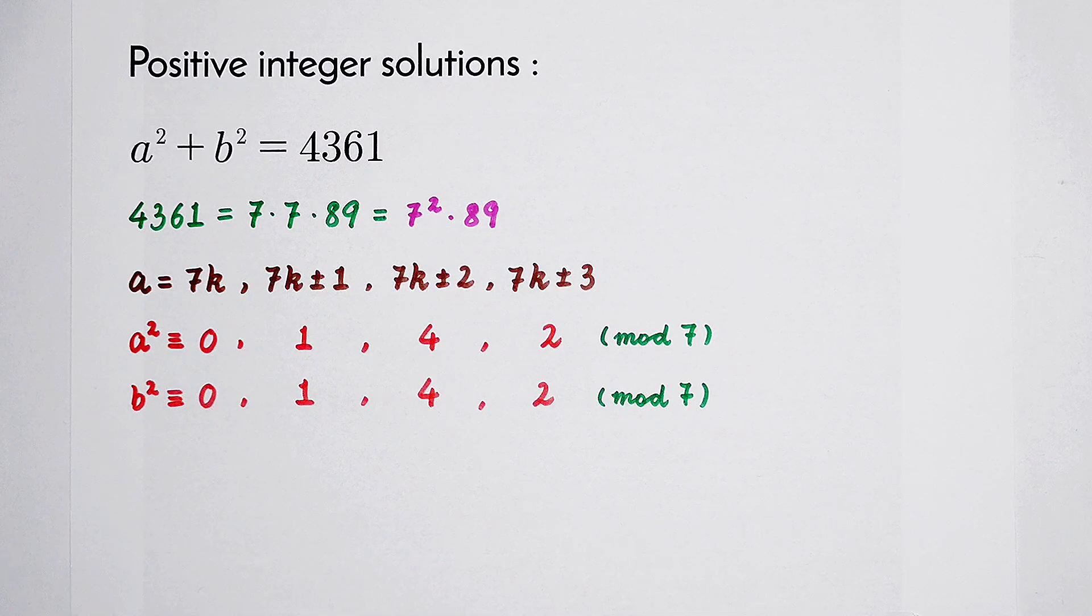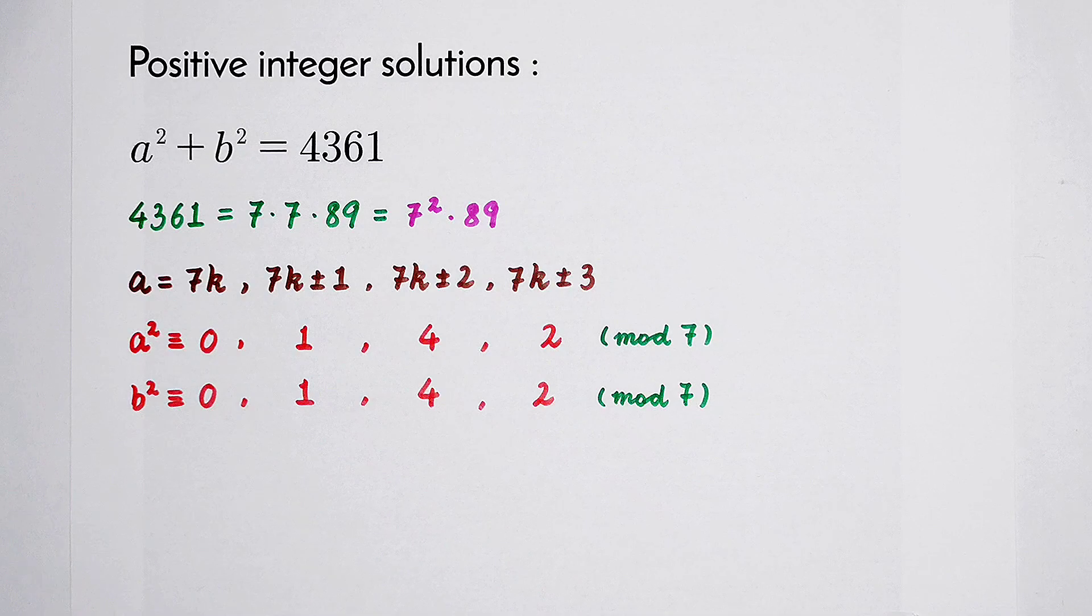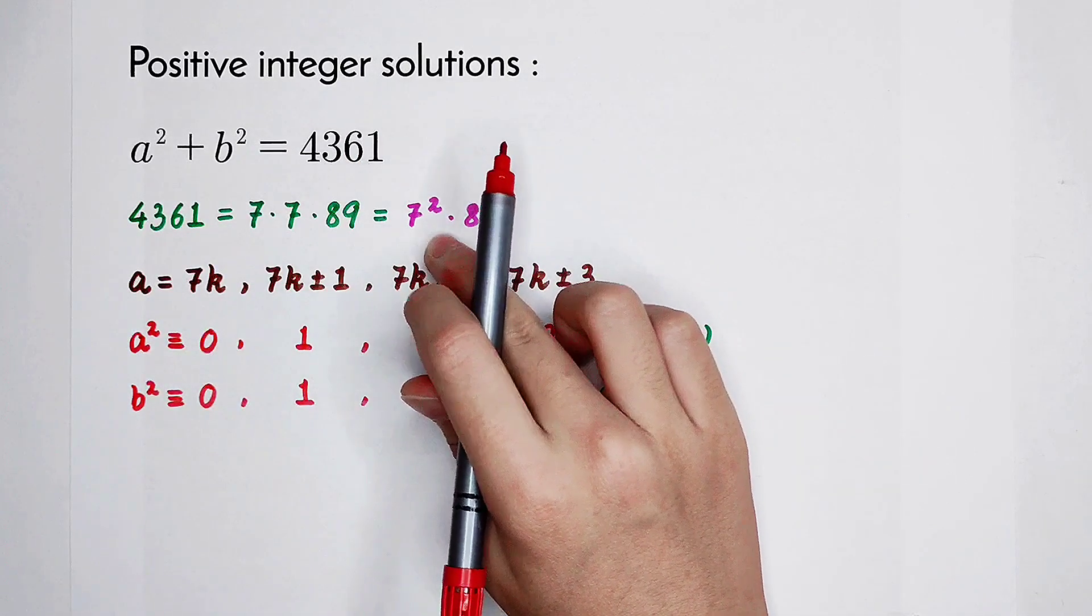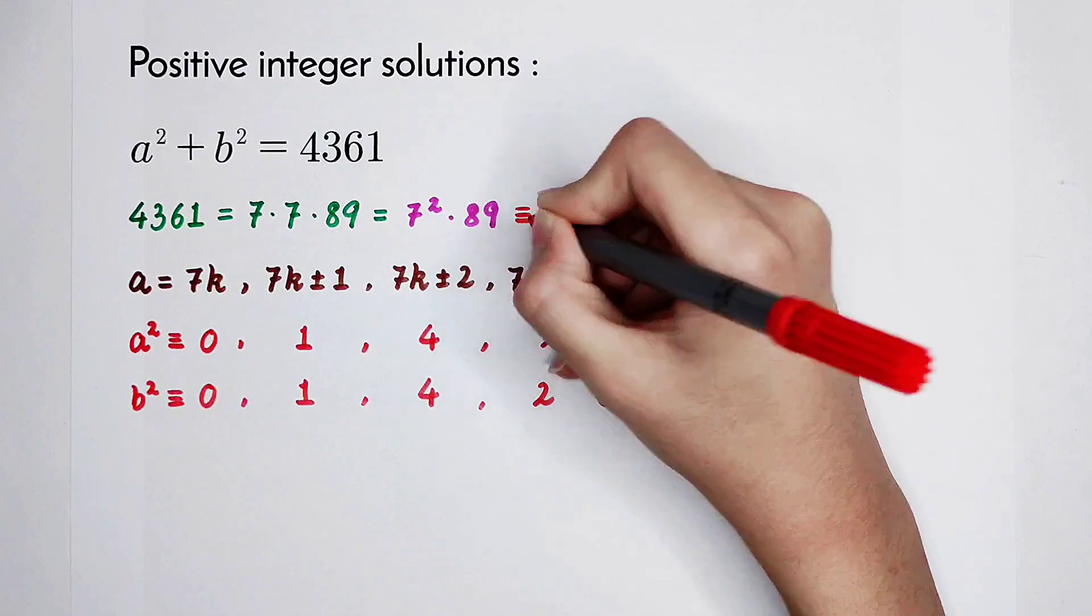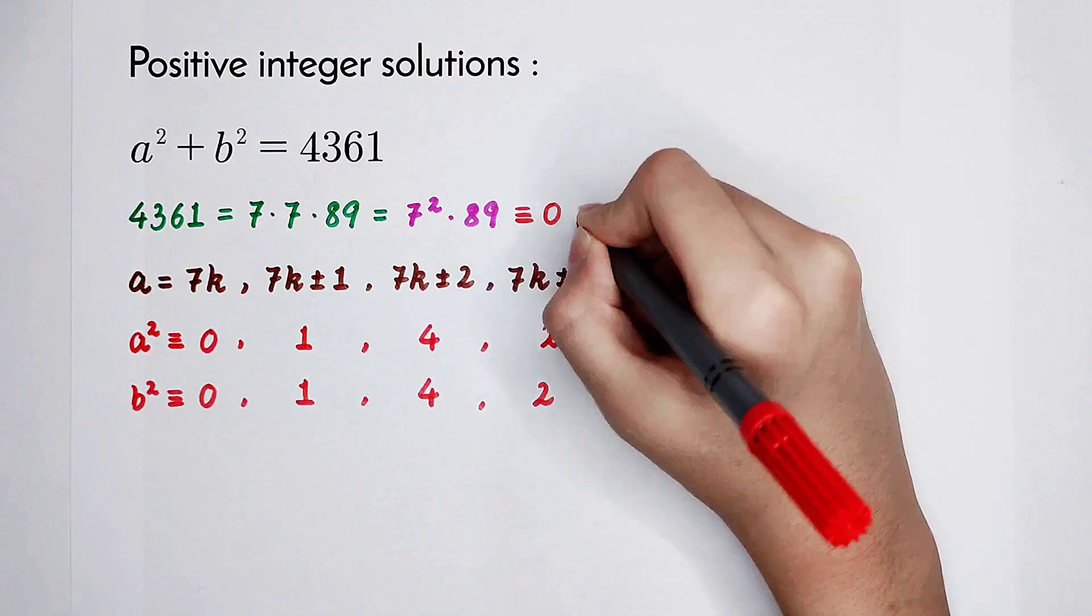Now we have to prove that both a and b are multiples of 7. Since this number is 7 squared times 89, it is a multiple of 7, so it is congruent to 0 mod 7.